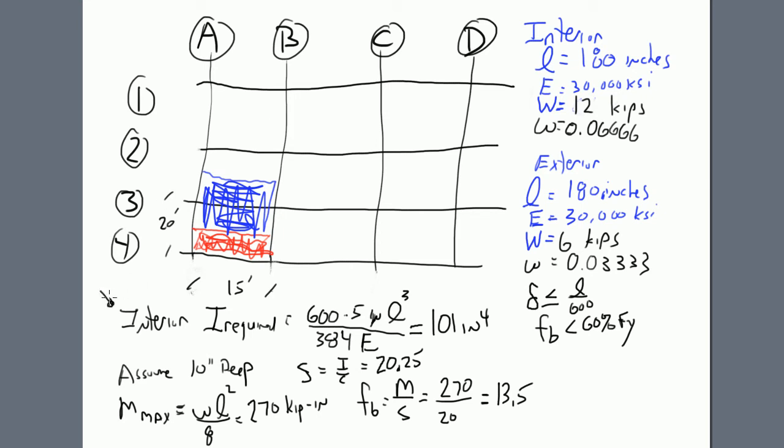We're going to deal with the interior girder. This is the interior one which has a load, and we're going to talk about what this load is in a bit. We know that if we design to an equation where the deflection criteria is less than span over 600, and we use the equation for a uniformly loaded simply supported beam with maximum deflection equal to 5WL⁴ over 384EI, we can solve for I.